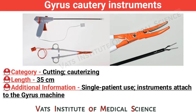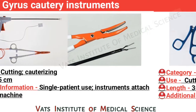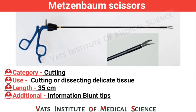Gyrus cautery instruments. Category: cutting and cauterizing. Length: 35 cm. Additional information: single patient use instrument attached to the Gyrus machine.